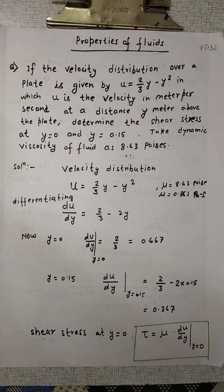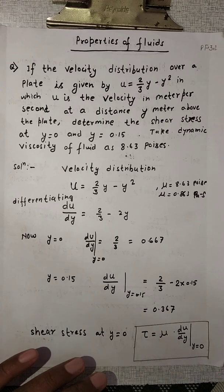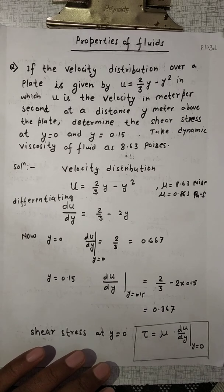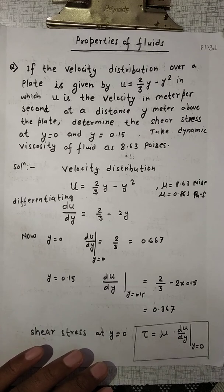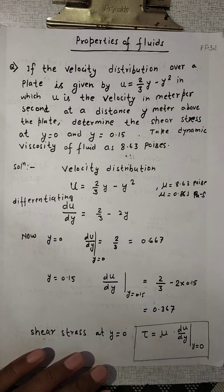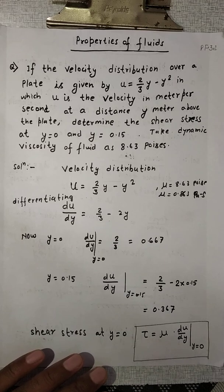Hello friends, welcome to my channel. We start with a question related to properties of fluids. The question is: if the velocity distribution over a plate is given by u = 2/3·y - y², where u is the velocity in meters per second at a distance y meters above the plate, determine the shear stress at y = 0 and y = 0.15.